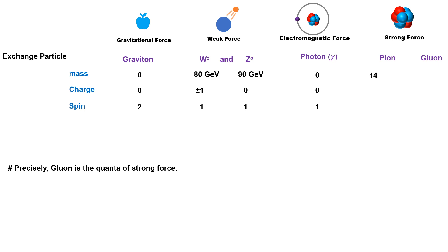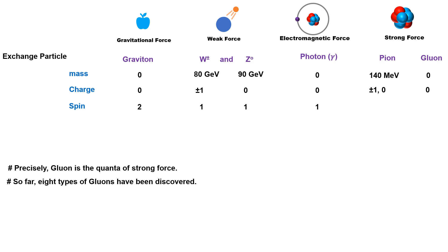The mass of the pion is around 140 MeV while the gluon is massless. There are three types of pion while so far a total of eight types of gluon have been discovered. The pion is both charged and neutral while all gluons are neutral particles. The spin of pion is zero while the spin of the gluon is one.